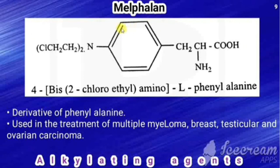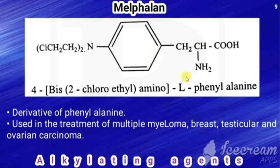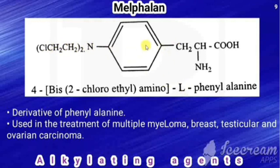The next drug is melphalan. Its structure consists of a phenyl ring with N(CH₂CH₂Cl)₂ and a CH₂CH(NH₂)COOH side chain. Since CH₃CH(NH₂)COOH is alanine, adding a phenyl group gives phenylalanine — here L-phenylalanine. With the bis(2-chloroethyl)amino group at position 4, the chemical name is 4-[bis(2-chloroethyl)amino]-L-phenylalanine. It is a phenylalanine derivative used in the treatment of multiple myeloma, breast, testicular, and ovarian carcinoma.